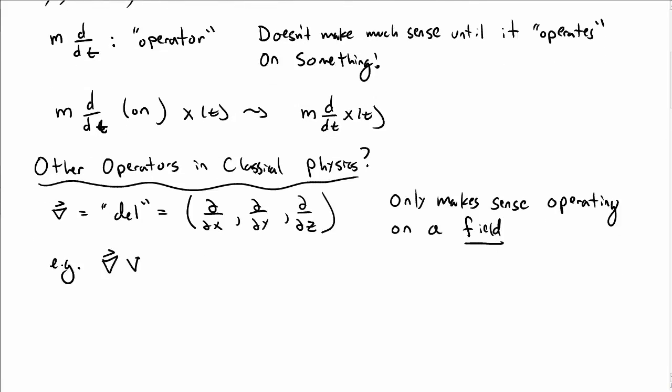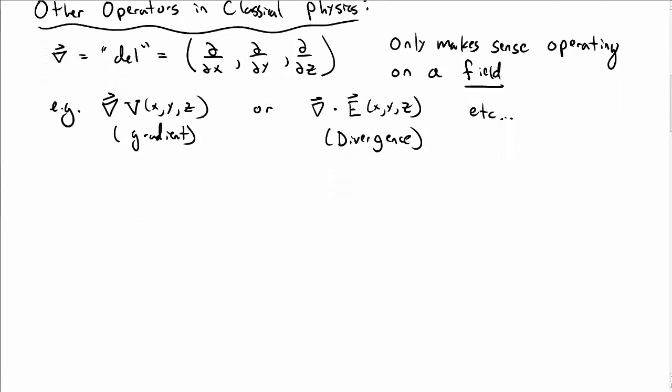So as an example, if you take the gradient of something like v of x, y, and z, say the gradient of a potential, or if you take the divergence of a vector field, say that could be the electric field, and so on. It only makes sense when operating on fields.